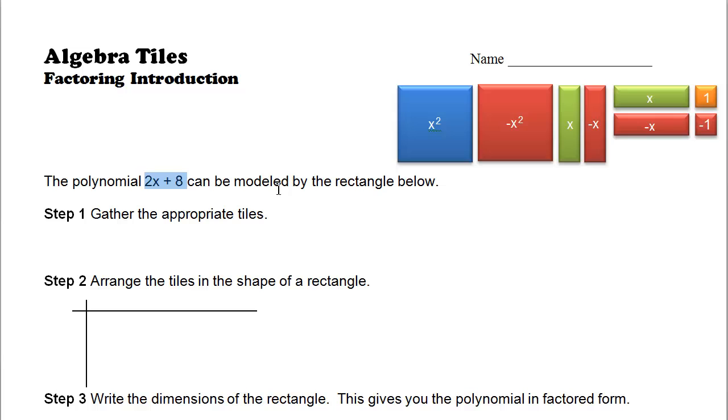To start, we gather the appropriate tiles. We want to take two of the x tiles and eight of the 1 tiles. When the tile is selected and we hold our control key down, we are able to copy it. So we're going to gather those tiles, two of these x tiles. And then we need eight 1 tiles.